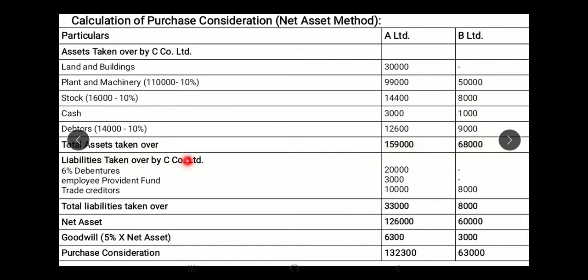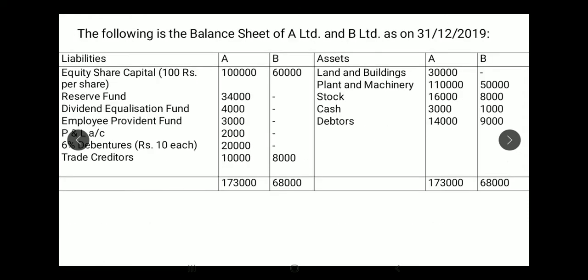For liabilities taken over, we look at the balance sheet liabilities. Outsiders' liabilities include trade creditors, debentures, and employee provident fund. Insiders' liabilities belong to shareholders or owners of the company — these include equity shares, reserve fund, dividend equalization fund, and accumulated profits (P&L). Dividend equalization fund belongs to equity shareholders, so it is an insiders' liability.